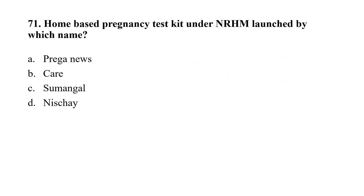Question number 71. Home-based pregnancy test kit under NRHM was launched by which name? Option A, Precanius; Option B, Care; Option C, Sumangal; Option D, Nisje. The correct option is A, Precanius.